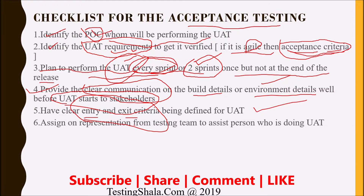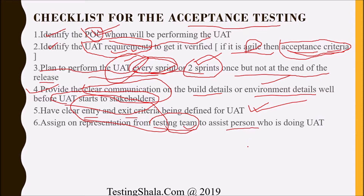The sixth checklist item: because all these tests will be done by the business team or end users, it is always good to assign someone from the testing team to support the UAT person. When end users are performing tests they may run into many issues and someone is required to clarify those issues. So it is always advisable to pair a testing team member with the POC who is performing the UAT.